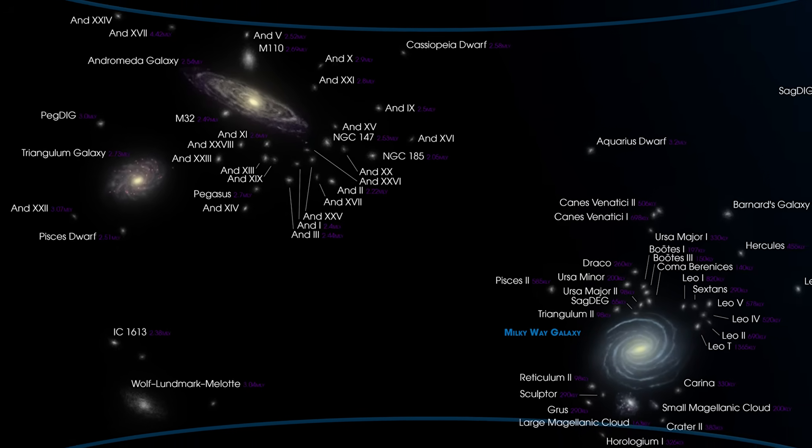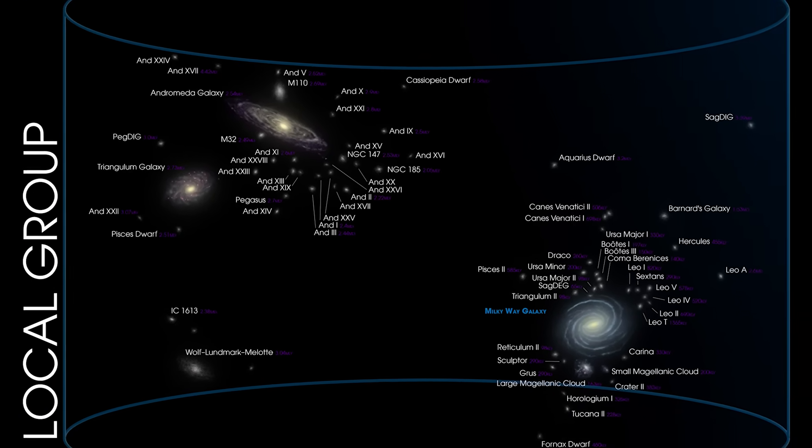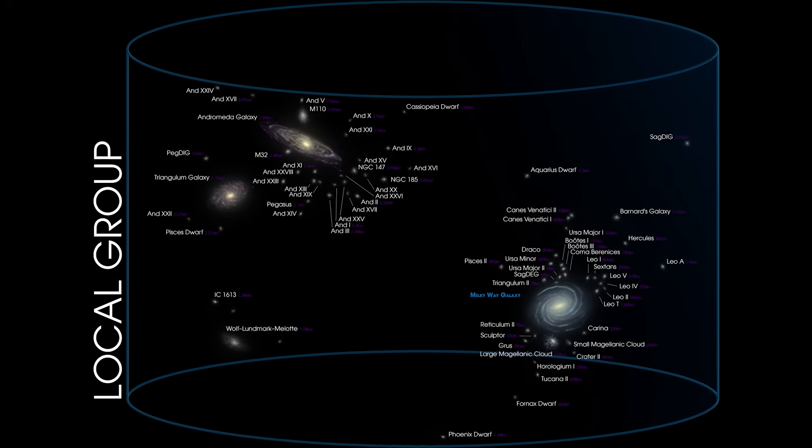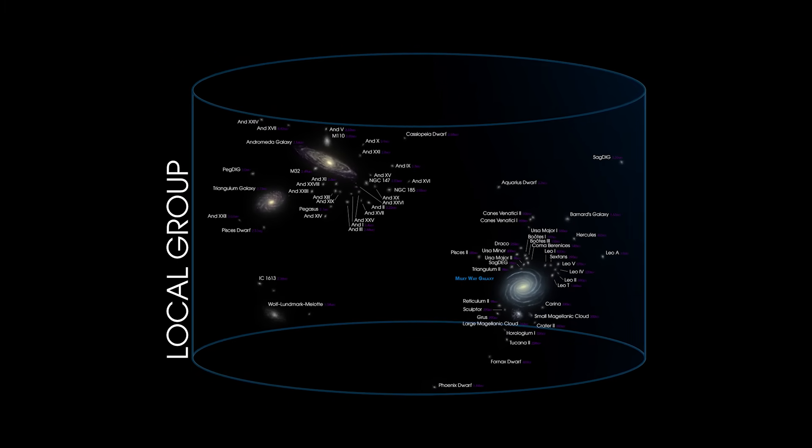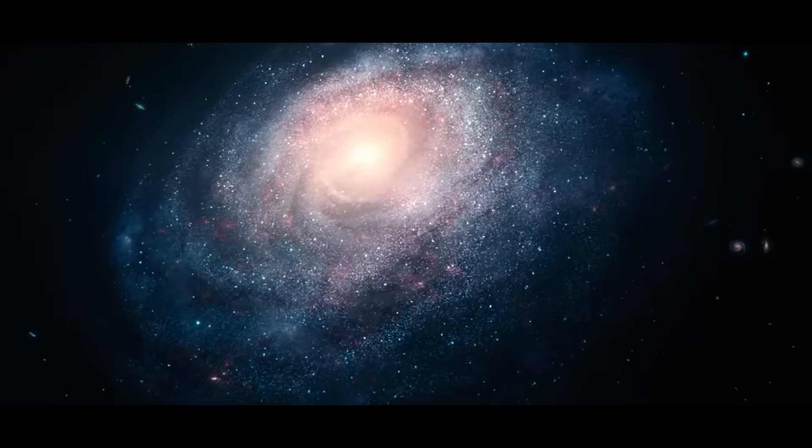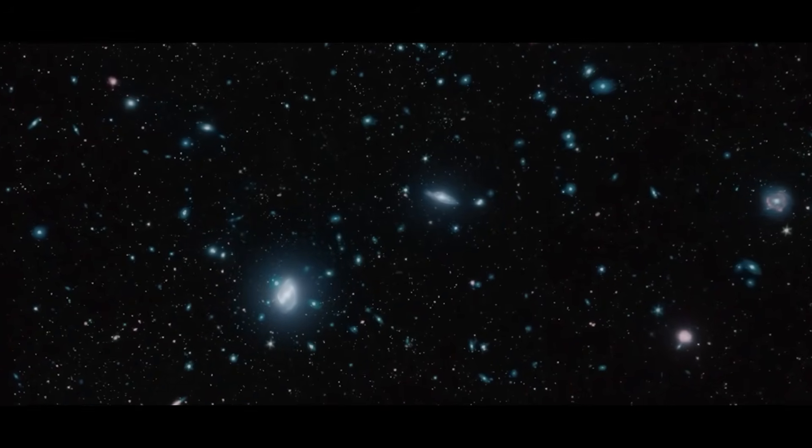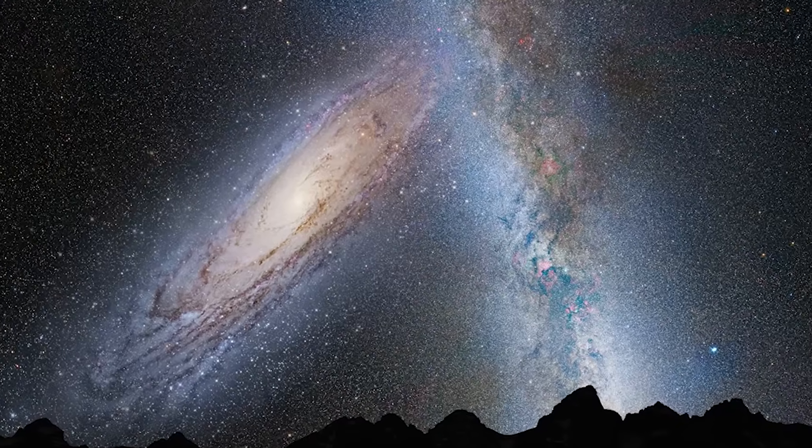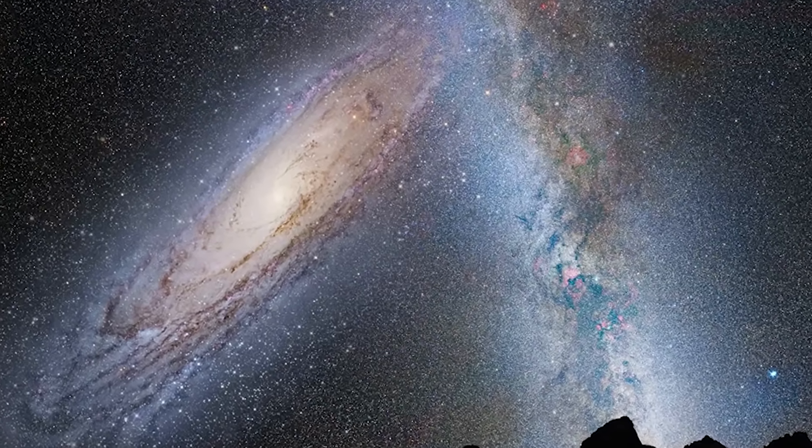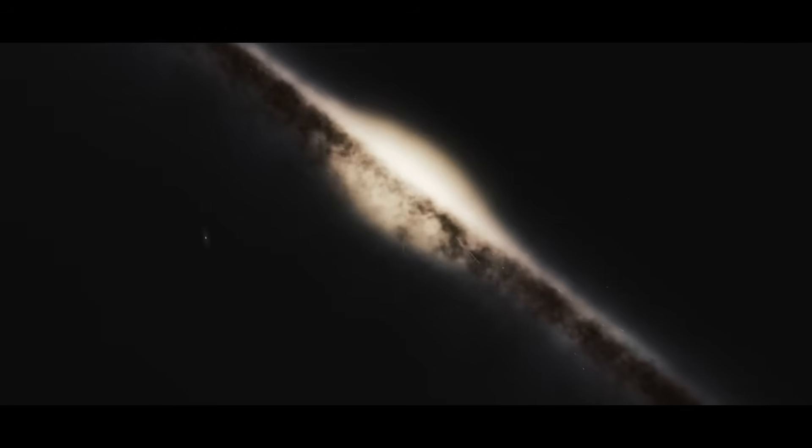The Milky Way is part of what is known as a local group, a large structure that consists of more than 50 galaxies concentrated in an area of space approximately 10 million light years in diameter. The largest galaxies in this group include the Andromeda Galaxy, the Triangulum Galaxy, and the Milky Way itself. Some estimates indicate that the total mass of this cluster may reach around 3 trillion solar masses. The distance from Earth to Andromeda is about 2.5 million light years, making it our closest galaxy, excluding small dwarf galaxies.